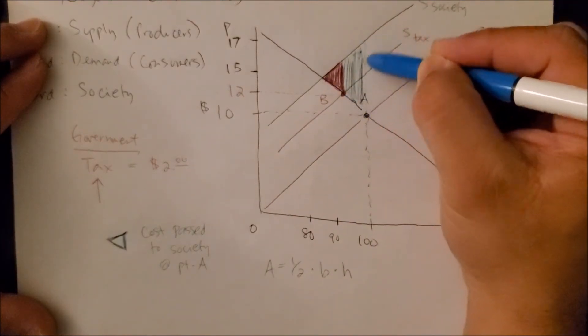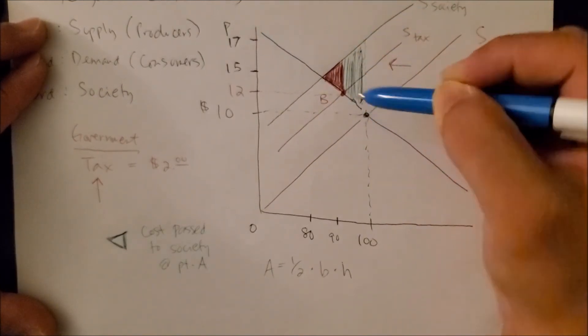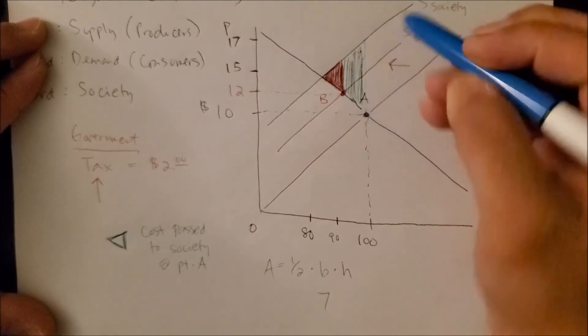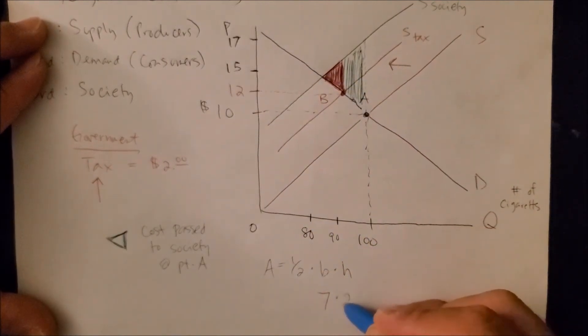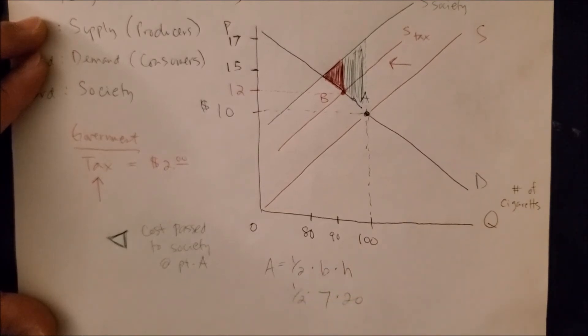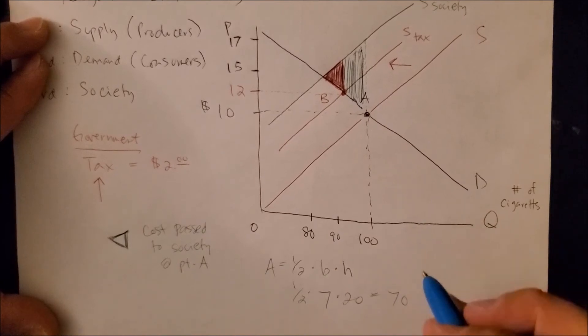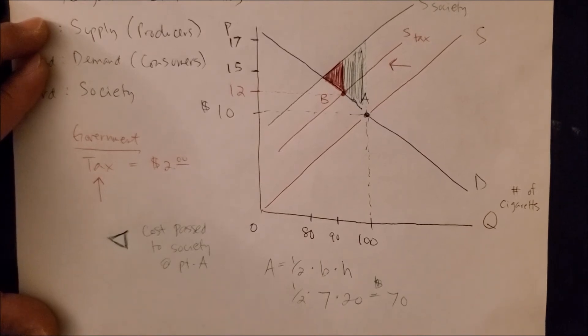The green triangle has a base of 17 minus 10, base of 7, and a height of 100 minus 80, which is 20 times half. 20 times 7 is 140 times half is 70. So now we can see how initially at point A, without the tax, there could be a cost of $70 per person to treat who is affected, who will be affected from secondhand smoking.